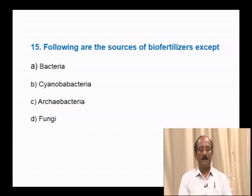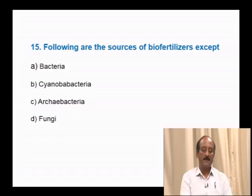Question number 15: Following are sources of biofertilizers except — bacteria, cyanobacteria, archaebacteria, fungi. Bacteria, cyanobacteria such as Nostoc and Anabaena, and fungi (mycorrhizae) help in soil enrichment and nitrogen fixation. However, archaebacteria are used for production of biogas, not as a source of biofertilizers. The correct answer is option C: archaebacteria.